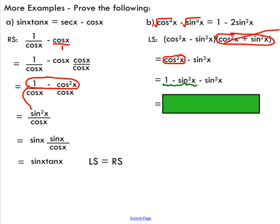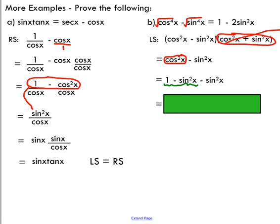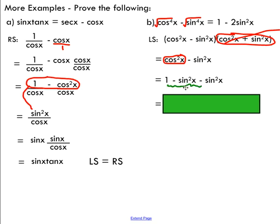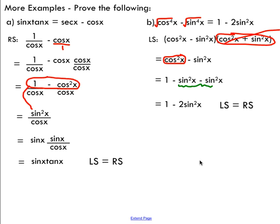Well now I've got a situation where I can collect like terms. I can collect my like terms here. These two sine x squared are like terms. So I've got two sine squared x's. Now I can just say that I've got one minus two sine squared x. So I've proved that the left-hand side equals the right-hand side.